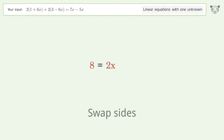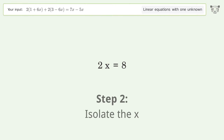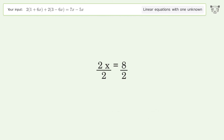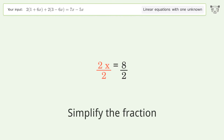Swap sides. Isolate the x by dividing both sides by 2. Simplify the fraction.